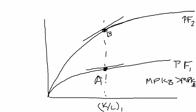Now the question is, I've got two different production functions here — one with a relatively low technology and one with a relatively advanced technology. The question is, if I'm looking for the point on production function 2 where the marginal product of capital is exactly equal to what it is at point A — in other words, the point I'll call point C — where is point C going to be?